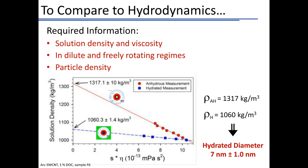We measure particle density through density contrast variation. For these larger diameter empty nanotubes, the anhydrous density is 1,317 kg/m³ and the hydrated density is 1,060 kg/m³.